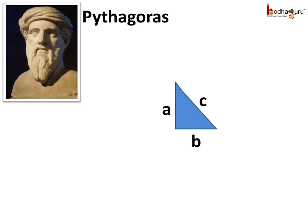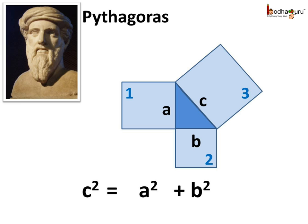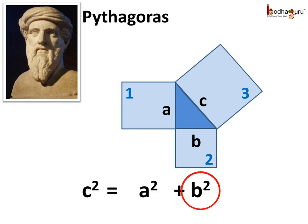Say the base is of length B units, the perpendicular is A units, and the hypotenuse is C units. Then the sum of the area of square 1 (which is A squared) and the area of square 2 (which is B squared) is equal to the area of square 3, the biggest square, which equals C squared. Hence, C squared is equal to A squared plus B squared.